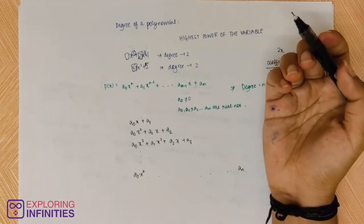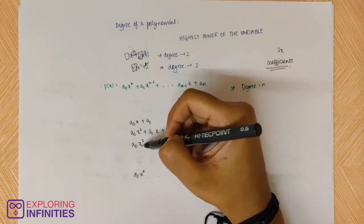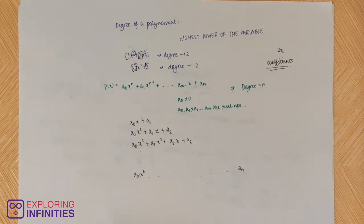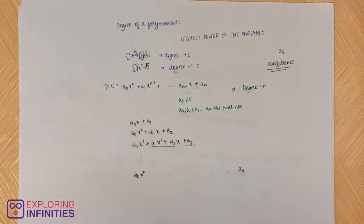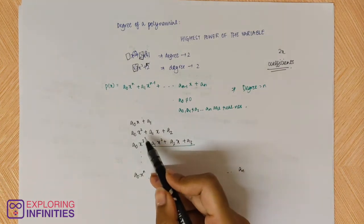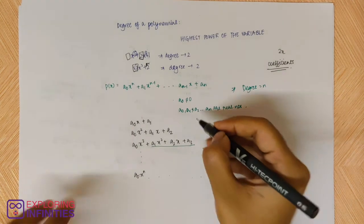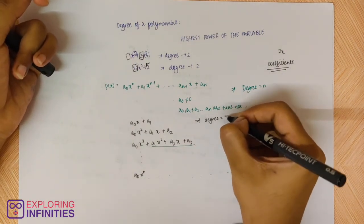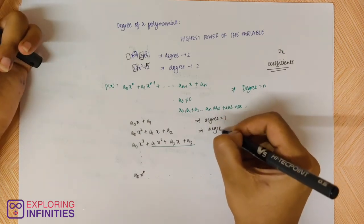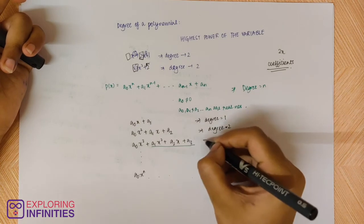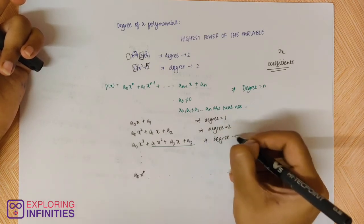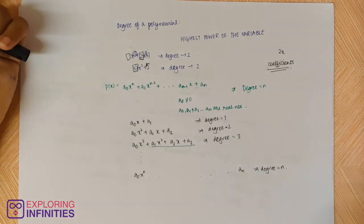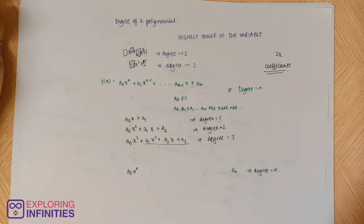What will happen if a₀ equals 0? If a₀ equals 0, then you move on to the next term because the first term becomes 0 and only the remaining part is left in your expression. Then the degree just becomes the next highest power. So degree equals n: here degree 1, here degree 2, here degree 3, and here degree n.